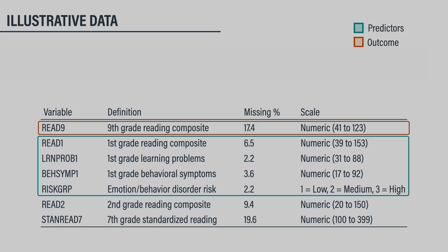I first want to introduce you to the dataset and analysis model that I'll be using throughout the video. The data are from a longitudinal education study that followed 138 students from primary to middle school. The file includes three annual assessments of broad reading achievement beginning in the first grade, 7th grade standardized achievement test scores, and a final measure of reading obtained in 9th grade. The data also contain teacher ratings of behavioral symptoms and learning problems from the first grade. The data and analysis scripts are available on the project website along with a document that includes annotated scripts and outputs.